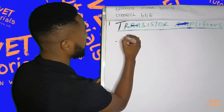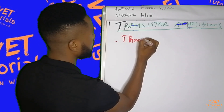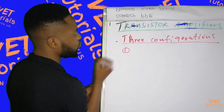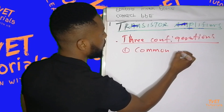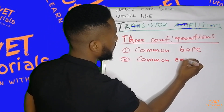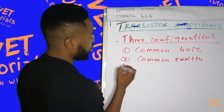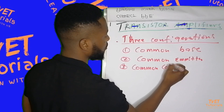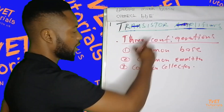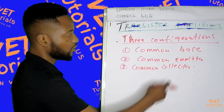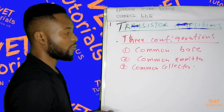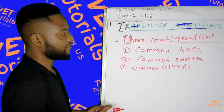So we have three configurations. The first one is the common base, we have the common emitter, and we also have the common collector. This is what you dealt with, and I believe you still remember — even at your lower levels, N1, N2, N3, you were asked to draw the common base, common emitter, and common collector.